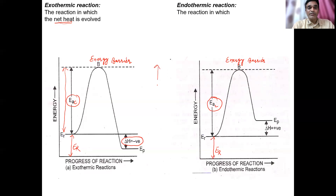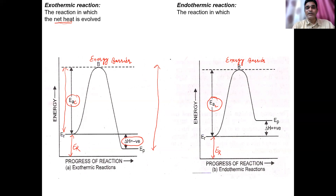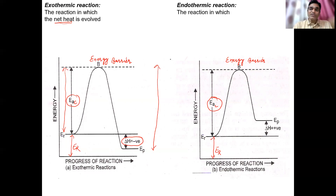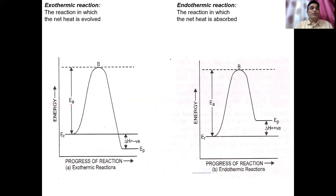In the exothermic case: the energy absorbed as activation energy is less than the energy released after crossing the barrier. So the net heat evolved is more than what was absorbed. That is why we say: the reaction in which net heat is evolved is called the exothermic reaction.